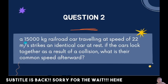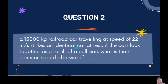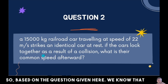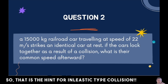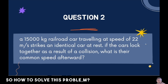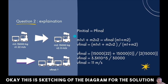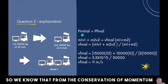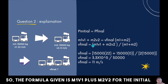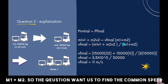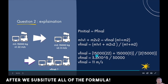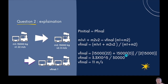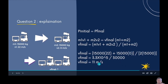Question 2: A 15,000 kilogram grand road car traveling at 22 meters per second strikes an identical car at rest. If the cars lock together as a result of the collision, what is their common speed after that? This is an inelastic collision because the cars lock together. Using conservation of momentum — P_initial equals P_final — we have M1V1 plus M2V2 equals V_final times (M1 plus M2). Substituting: 15,000 times 22 plus 15,000 times 0 equals (15,000 plus 15,000) times V_final. The final answer is 11 meters per second.